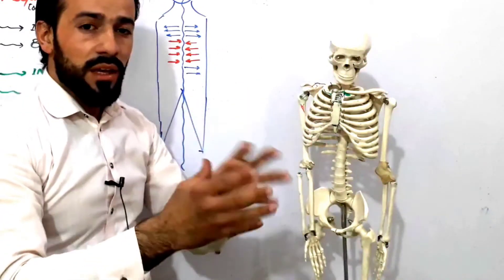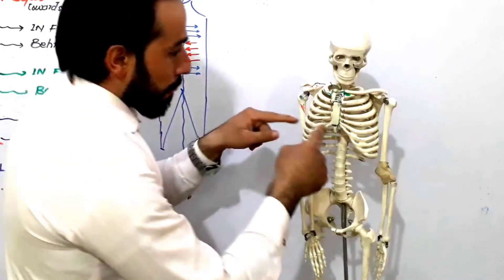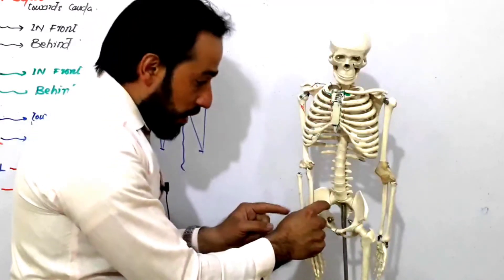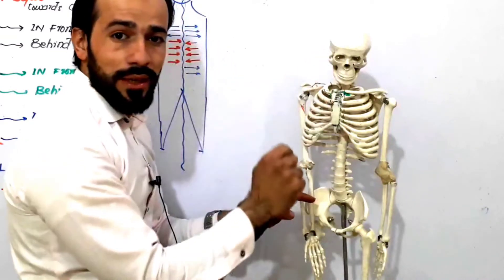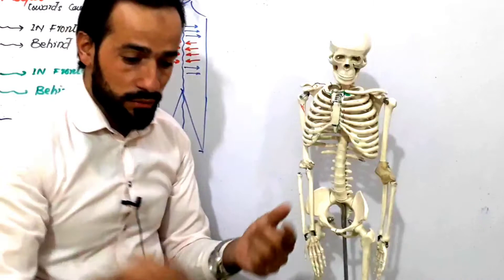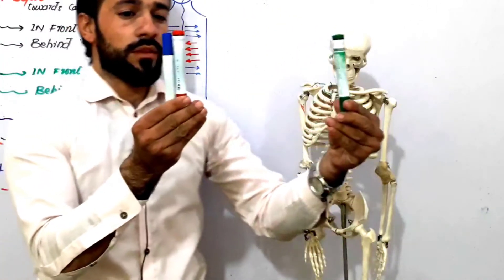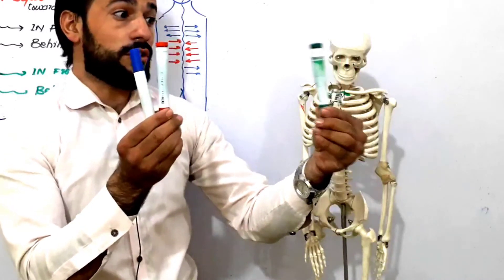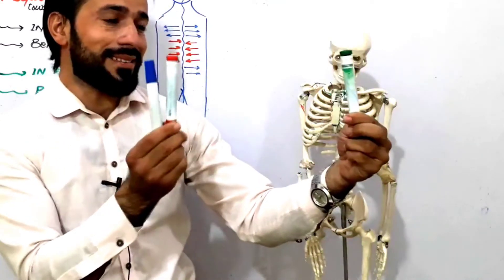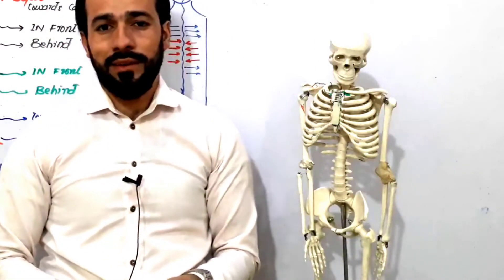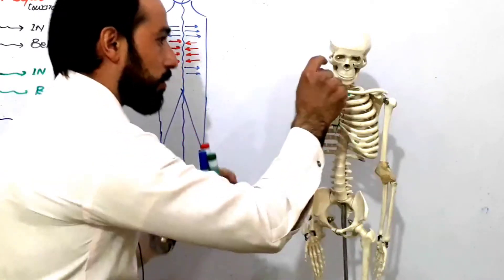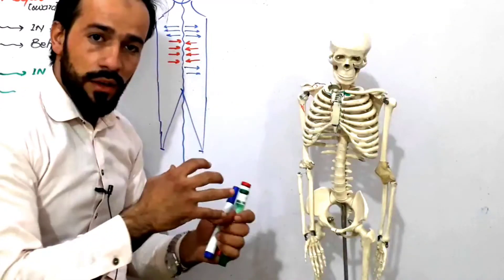So my elbow joint is proximal to my shoulder joint, but my wrist joint is distal to my shoulder joint. Distal means away, proximal means near. My heart is proximal to my head, but my cecum is distal to my head. The red marker is proximal to the blue marker, but the green marker is distal to the blue marker. So we relate these terms when discussing the position of different organs.